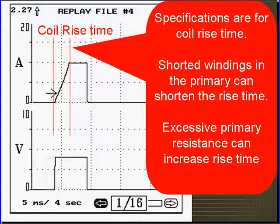Specifications are for coil rise time. Shorted windings in the primary can shorten the rise time. Excessive primary resistance can increase the rise time.